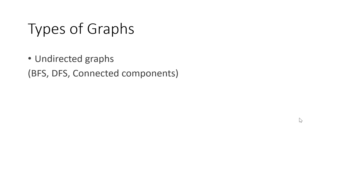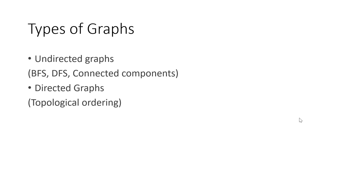The other kind of graph we'll be implementing is directed graphs. Directed graphs are mostly used to find topological ordering in the graph. These two graphs do not have any kind of weight associated with the edges. That is why the third kind of graph is edge weighted graphs.